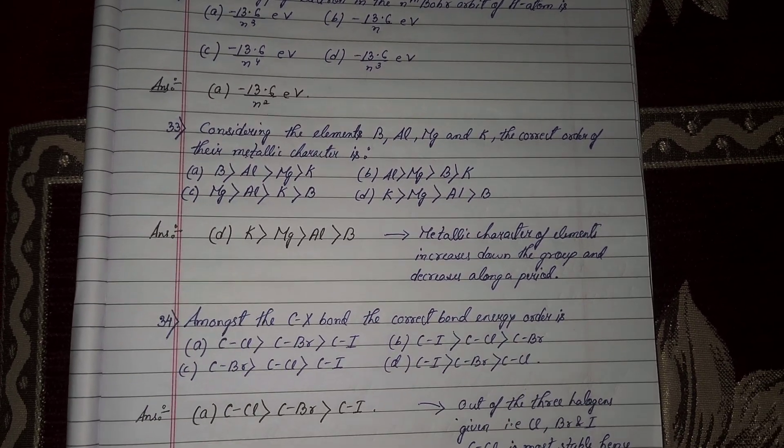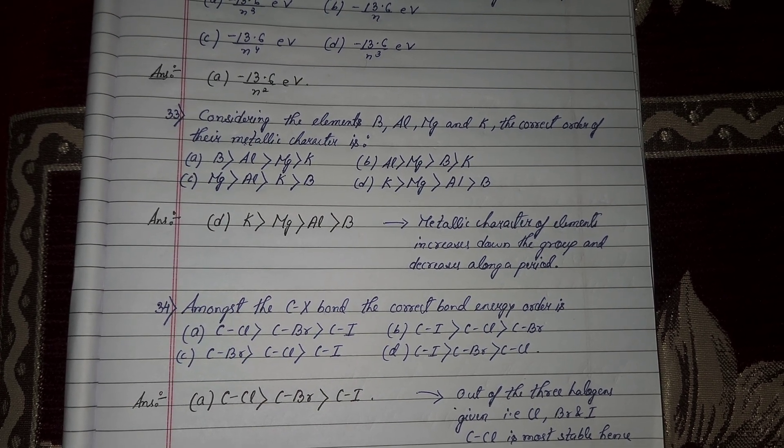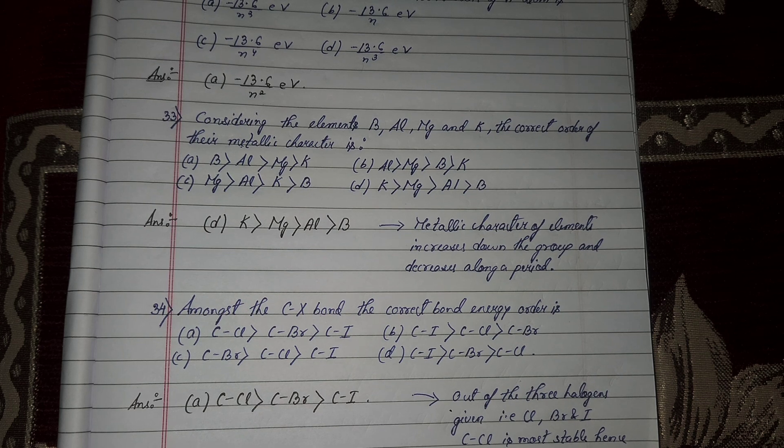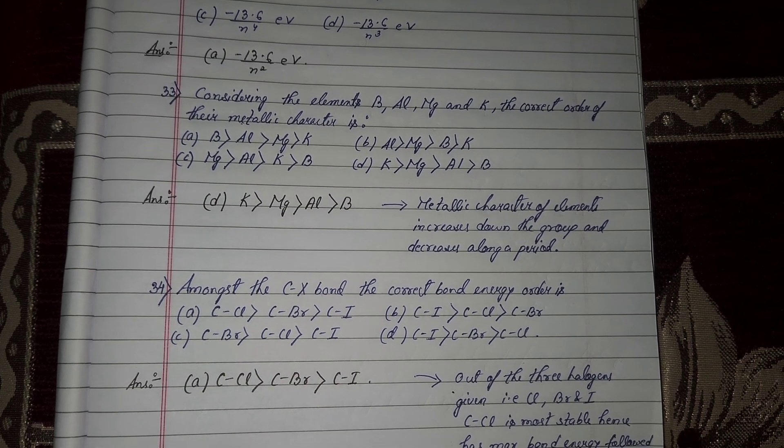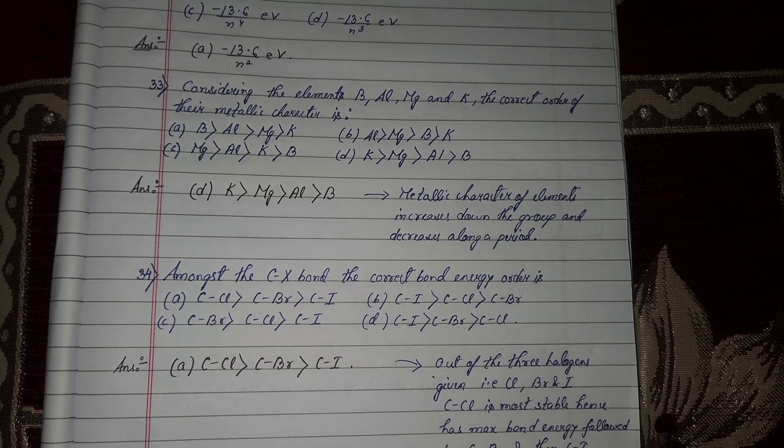Next question number 33, considering the elements boron, aluminium, magnesium, and potassium, the correct order of the metallic character is option number D, potassium greater than magnesium greater than aluminium greater than boron.